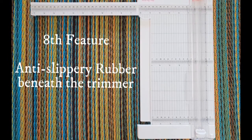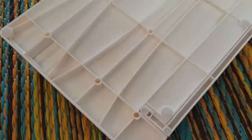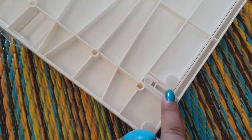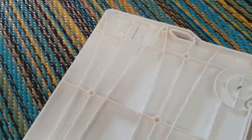The trimmer features anti-slip rubber beneath to make crafting smooth on tabletops. You can see these rubbers—they make the trimmer not move while cutting your papers.